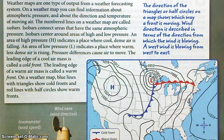It says weather maps are one type of output from a weather forecasting system. On a weather map, you can find information about atmospheric pressure and about the direction and temperature of moving air. The numbered lines on a weather map are called isobars. Isobars connect areas that have the same atmospheric pressure. Isobars center around areas of high and low pressure.